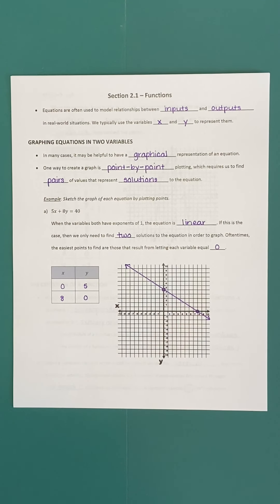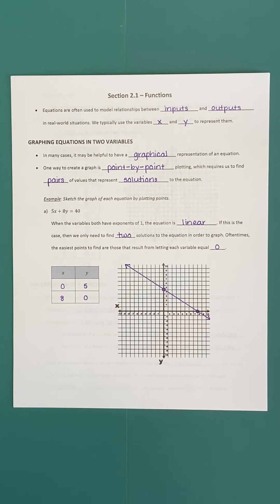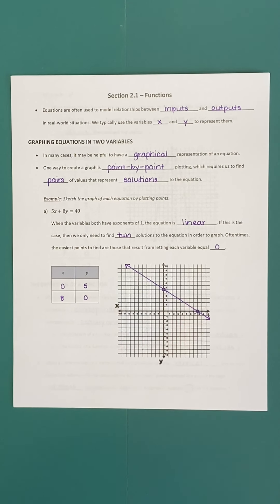When we're talking about a situation with inputs and associated outputs, typically we're going to use the variables x and y to represent them. X represents an input and y represents the output that goes with any particular input. In a lot of cases we may want to graph an equation — we can determine a lot about a relationship between inputs and outputs by graphing it. One of the most straightforward ways to graph an equation is point-by-point plotting: determining individual x and y pairs and graphing them on the coordinate plane. If we can get enough ordered pairs, we can determine the general shape of the graph.